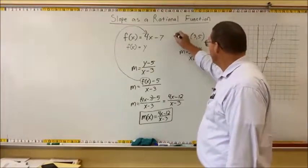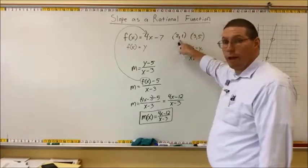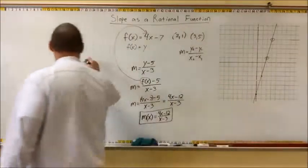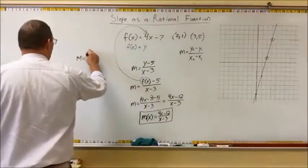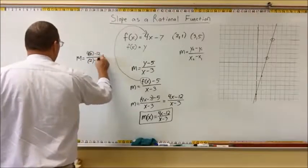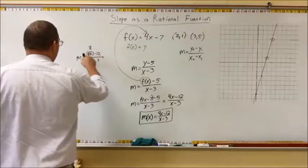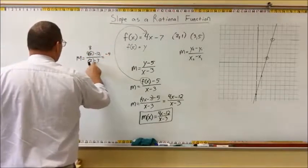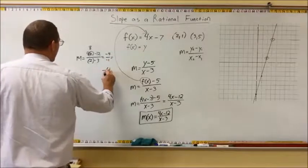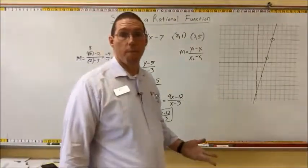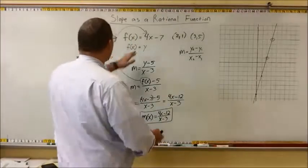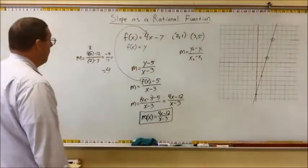Let me show you what I mean. We had the point 2, 1 up here, right? So x was 2. So if we put a 2 in for x, this is what we'll have. Let me come over here. We'll have m equals 4 times 2 minus 12 all over 2 minus 3. Well, 4 times 2, that's 8. 8 minus 12 is negative 4. 2 minus 3 is negative 1. And negative 4 divided by negative 1 is 4. And so the slope is 4.